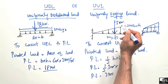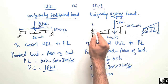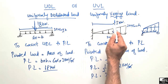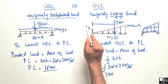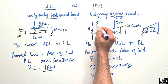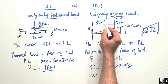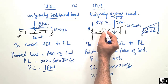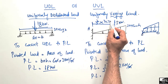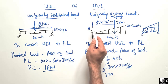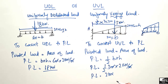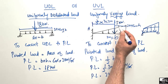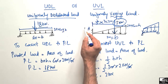This 3 kN load acts at the centroid of the triangle. The centroid distance from the fixed support at point A is two-thirds of the total distance. Since the total distance is 3 meters, the centroid is at 2/3 × 3 = 2 meters from the support, and 1 meter from the free end. This is how we convert a uniformly varying load into a pointed load to find support reactions and moments.